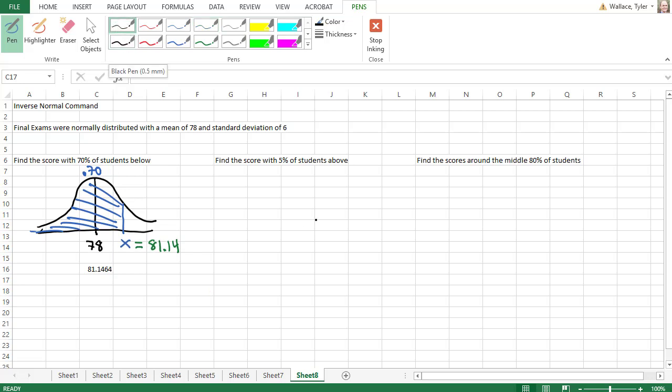Now, if we want to find a score with 5% of students above it to identify those top 5% of students, we have our mean at 78 on our picture, and we want 5% above it. So we just want that little 0.05 above it.